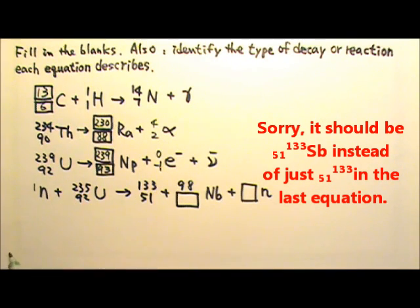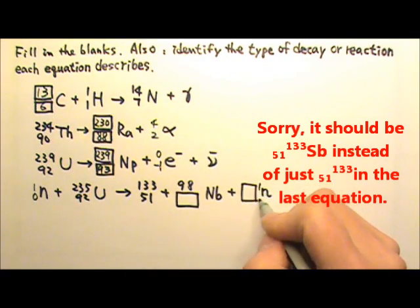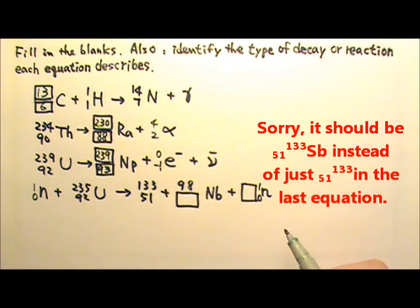Neutron has one nucleon and zero protons. So we put in 1, 0 to help us balance this equation.